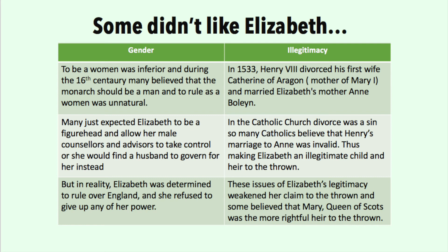Another view was the fact that she was considered illegitimate. In 1533 Henry VIII divorced his first wife, Catherine of Aragon, and married Elizabeth's mother, Anne Boleyn. In the Catholic Church divorce was a sin, so many Catholics believed that Henry's marriage to Anne was invalid, thus making Elizabeth an illegitimate child and heir to the throne. These issues of Elizabeth's legitimacy weakened her claim to the throne, and some believed that Mary, Queen of Scots, was a more rightful heir.